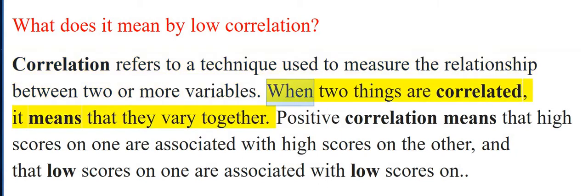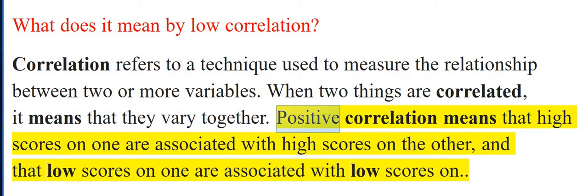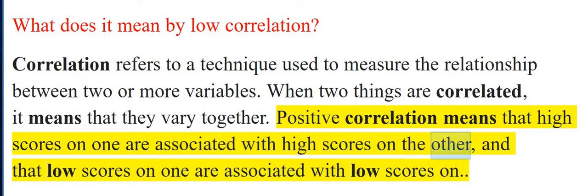When two things are correlated, it means that they vary together. Positive correlation means that high scores on one are associated with high scores on the other, and that low scores on one are associated with low scores on the other.